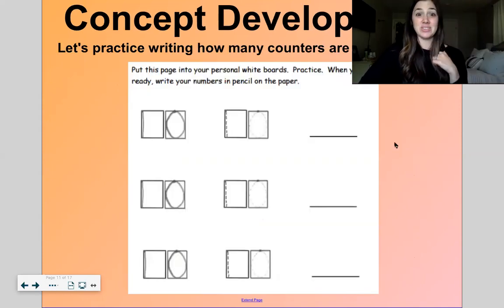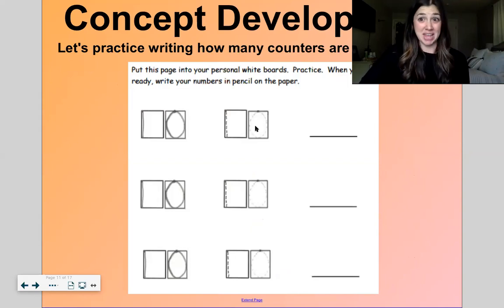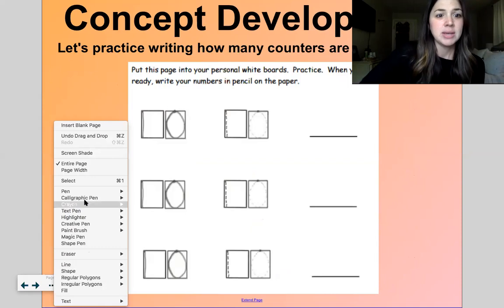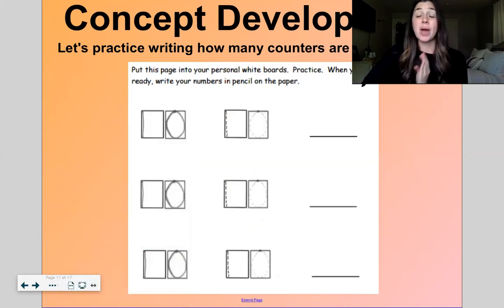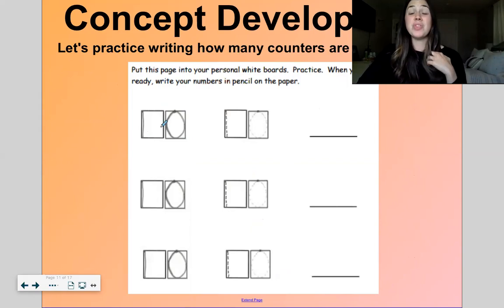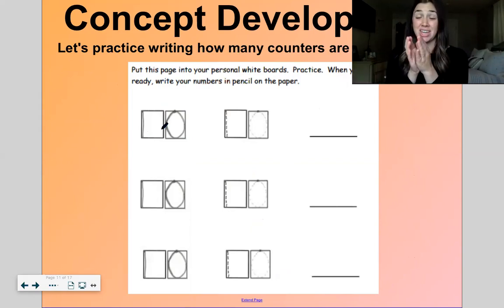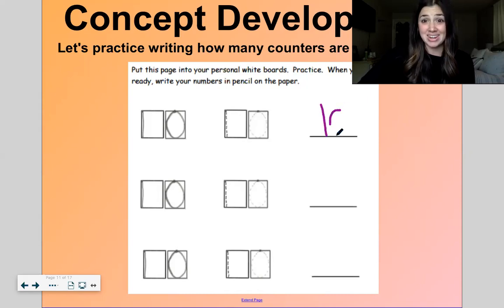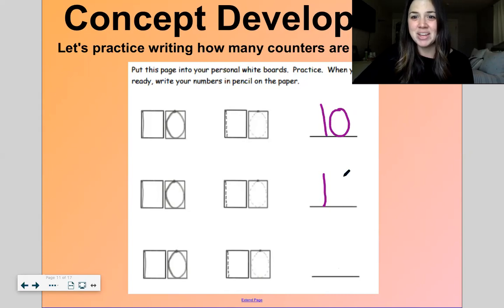Now let's practice writing the number ten. I am going to get my pen out and this is the first number that we're writing that has two digits. A digit is like just one number. One is a digit. Zero is a digit. So this number ten has two digits together that makes one number. To write the number ten we have to write a one and then a zero. Straight line down, then you're done. That's how you make a number one. And then there is our zero.